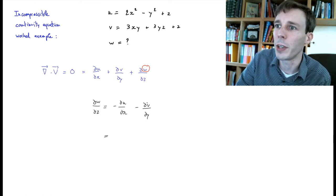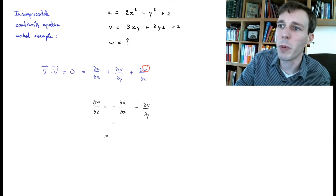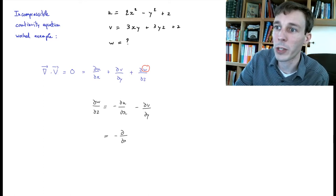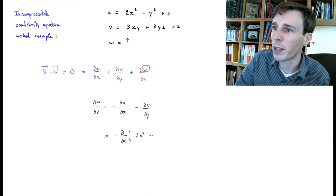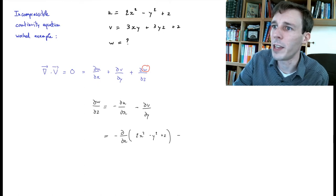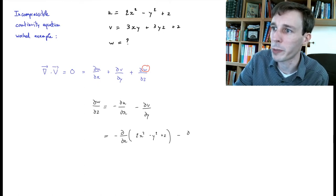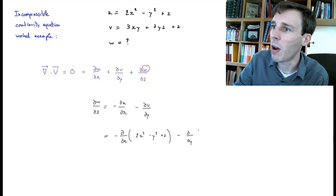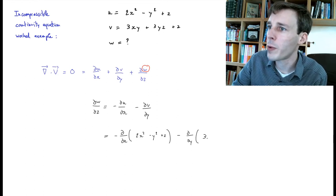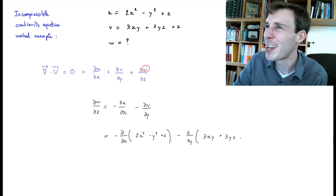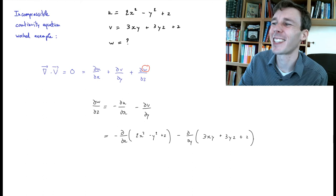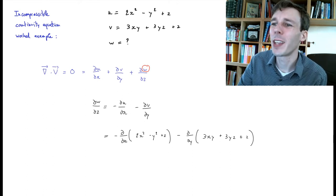What we're going to do is to introduce instead of this u and v the components that we have above. So we have minus the partial derivative with respect to x of this whole expression which is 2x squared minus y squared plus z, and then minus the partial derivative with respect to y of 3xy plus 3yz plus z.